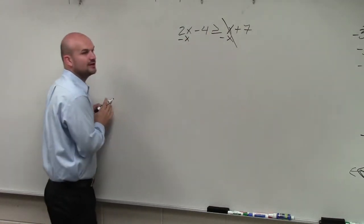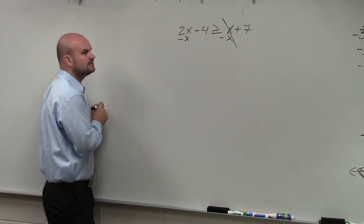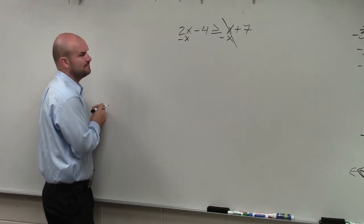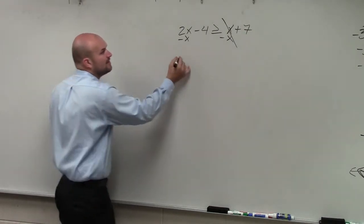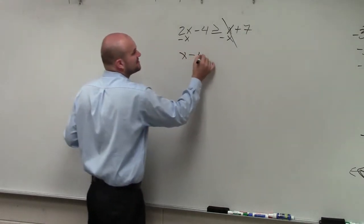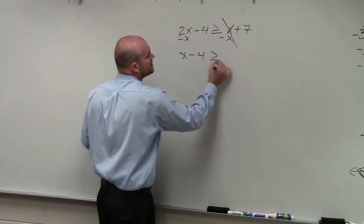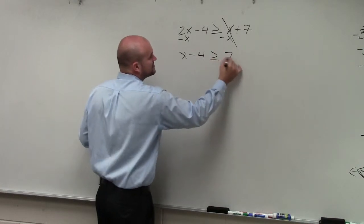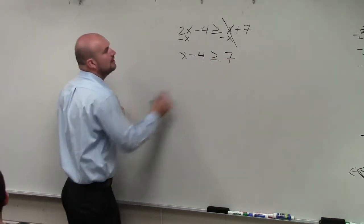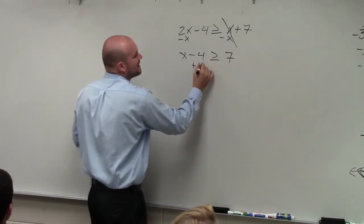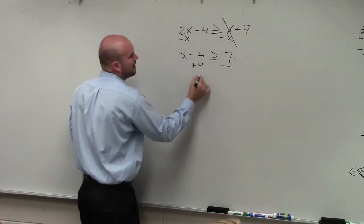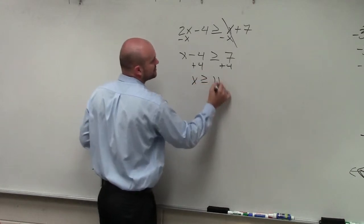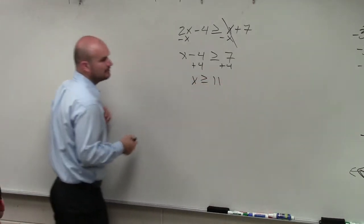Subtracting x on both sides makes that go to zero. Then I have x minus 4 is greater than or equal to 7. Now I can just add 4, and x is greater than or equal to 11.